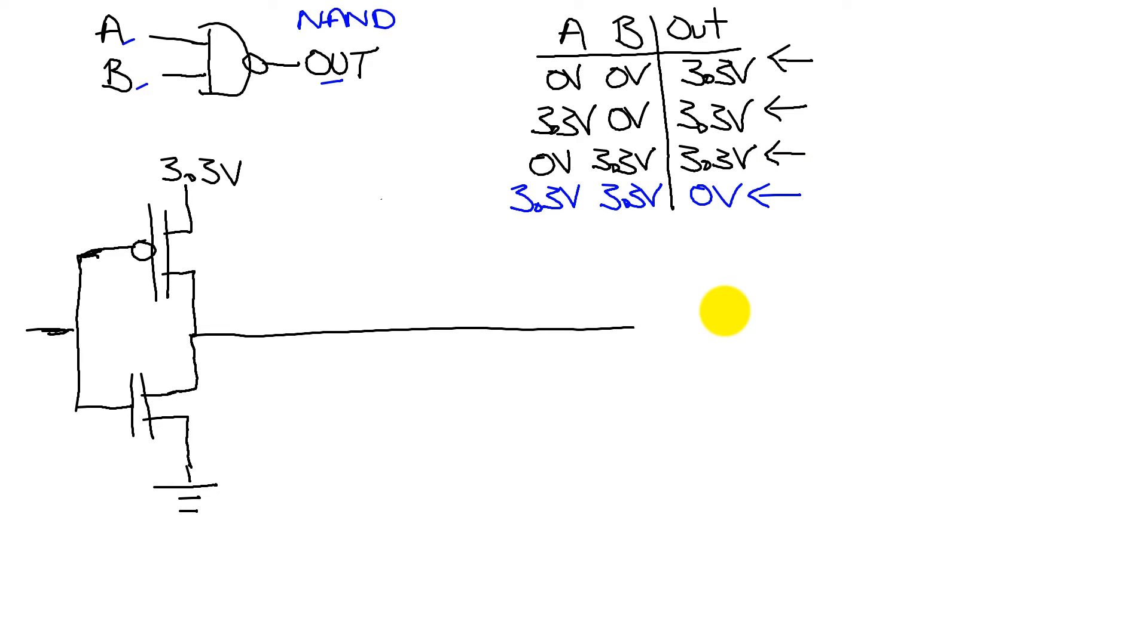We'll begin with a NOT gate that we saw from the last video. If this signal is A and this signal is out, if A is high, out will be low, and if A is low, out will be high, a NOT gate.